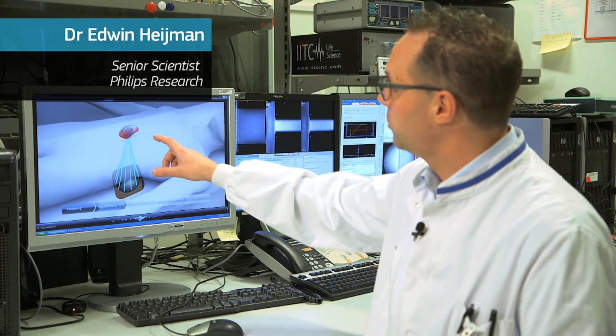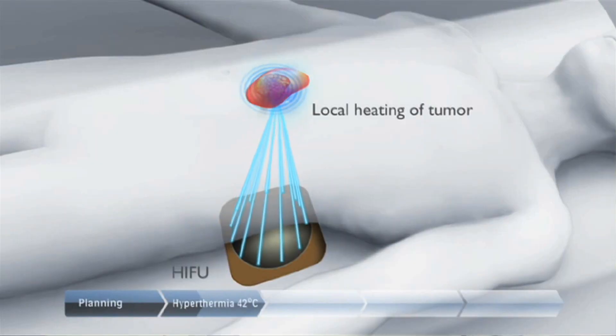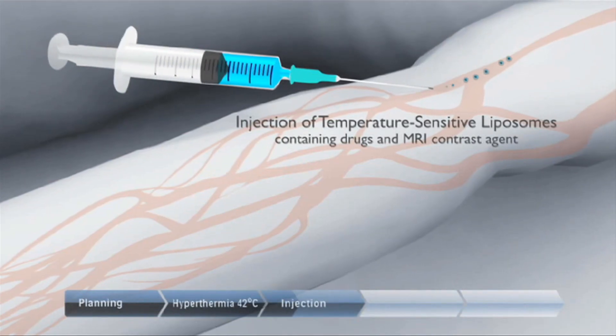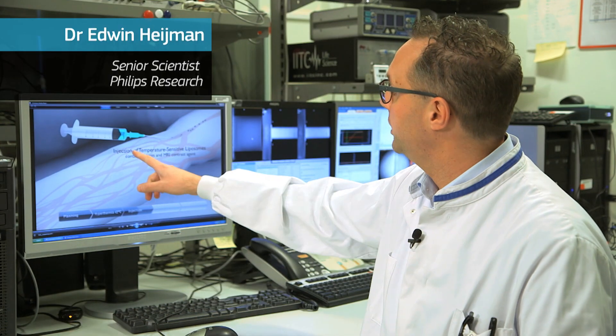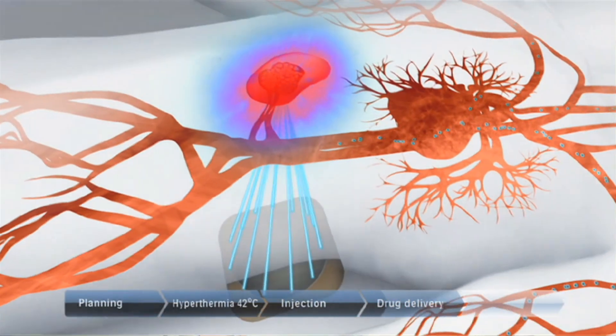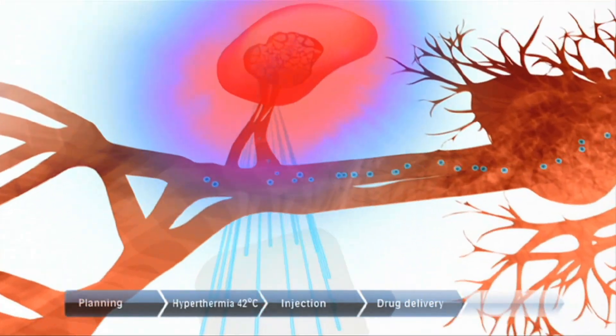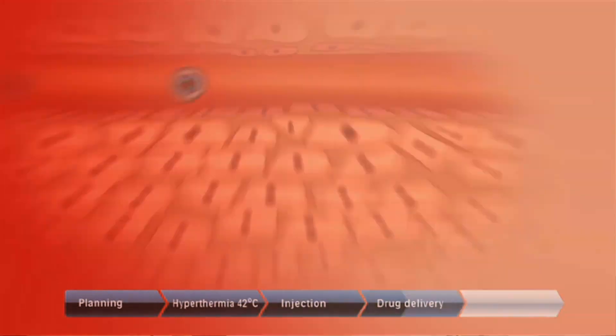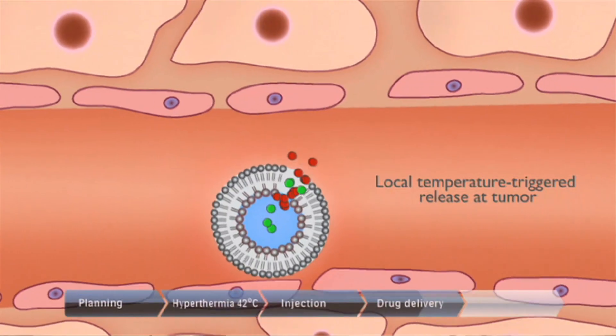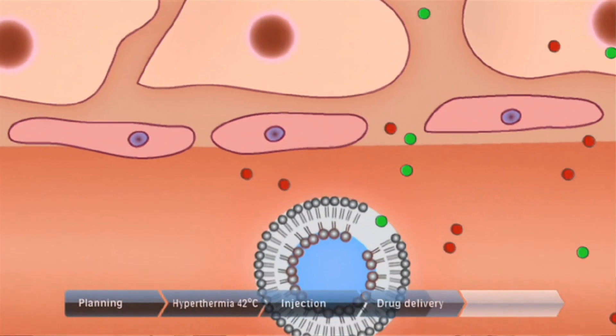The MR scans can localise our tumour. We heat locally our tumour using ultrasound. We inject these liposomes which contain the drug. They circulate through the body but are stable at 37 degrees. They reach this area where we have hyperthermia at 42 degrees, release their content, and the drug as well as contrast agencies enter the tissue.